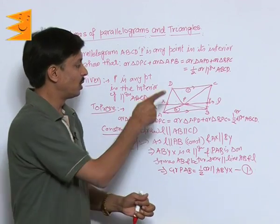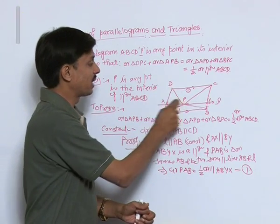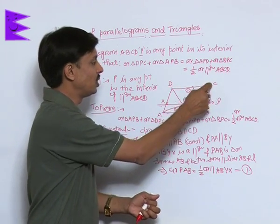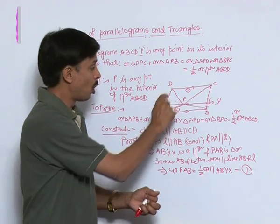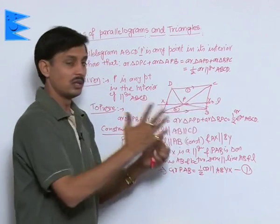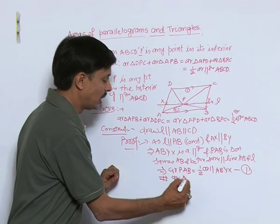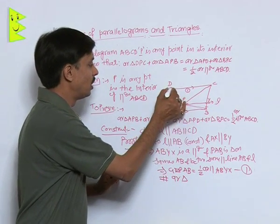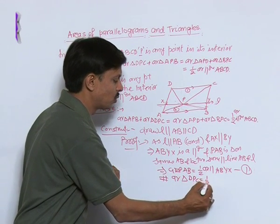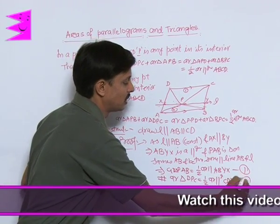Similarly, DXYC is also a parallelogram on base DC, and triangle DPC is a triangle on the same base DC and between the same parallel lines DC and L. So we conclude: area of triangle DPC equals half of the area of parallelogram CDXY — relation 2.